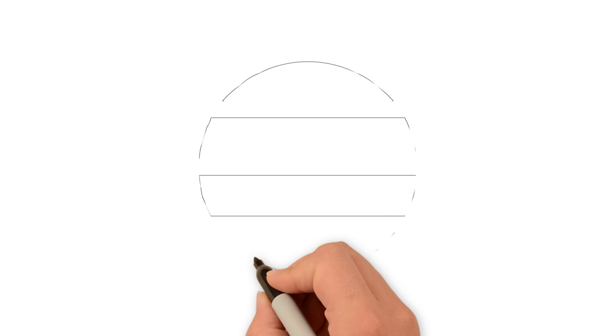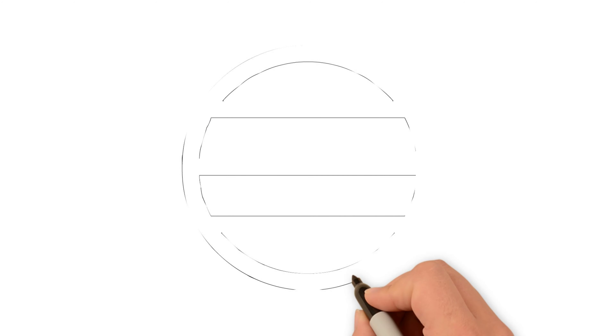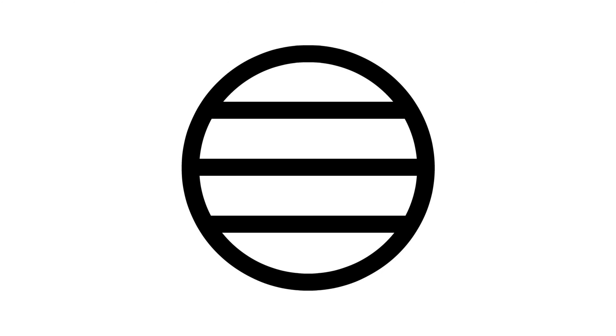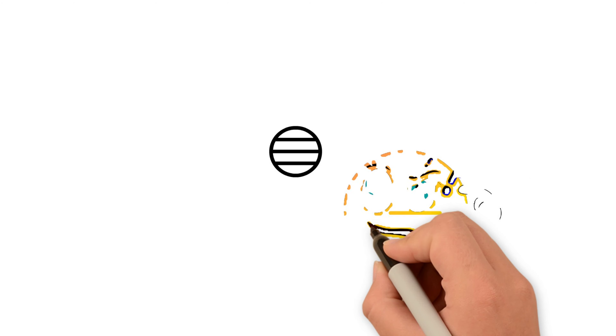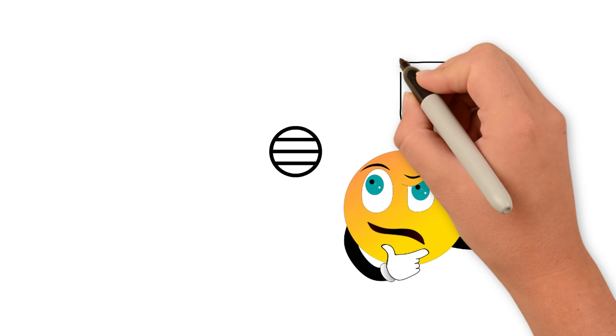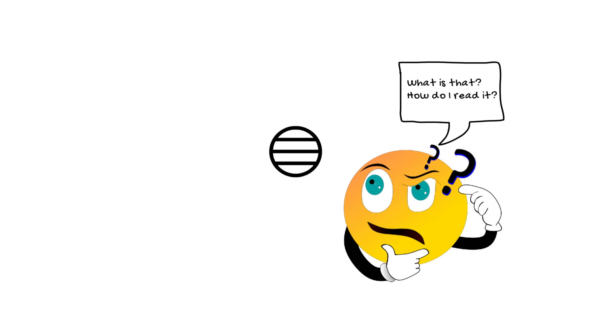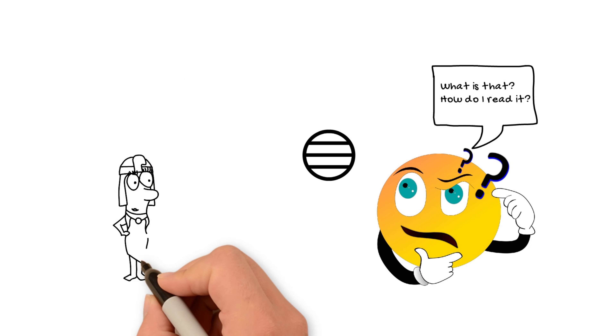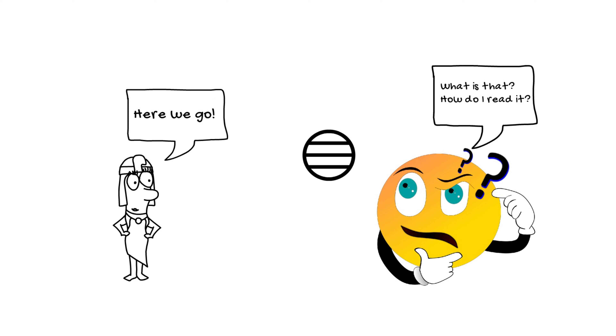I'm back with another hieroglyph. So what is this round one with the stripes in it, and how was it used in ancient Egyptian? That's what I'll get into in just a moment.